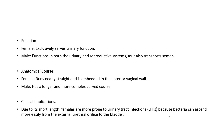In terms of function, the female urethra is basically just for urine passage, while the male one carries both urine and semen, serving reproductive system purposes too. Anatomically, the female urethra runs straight and is embedded in the anterior vaginal wall, while the male one has a longer and more complex curved course.